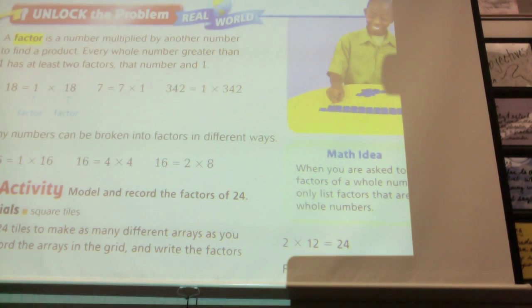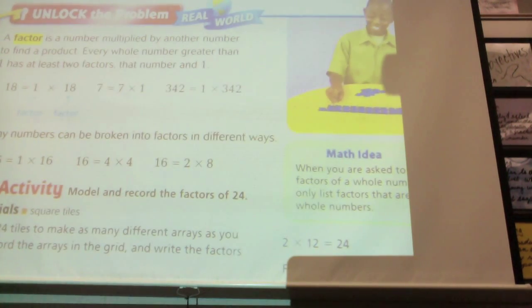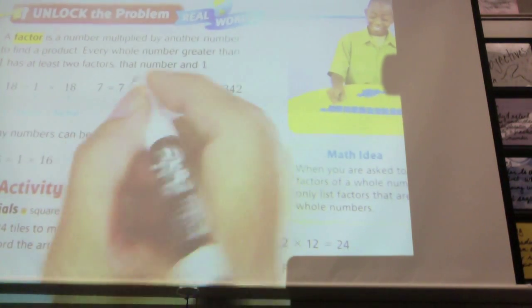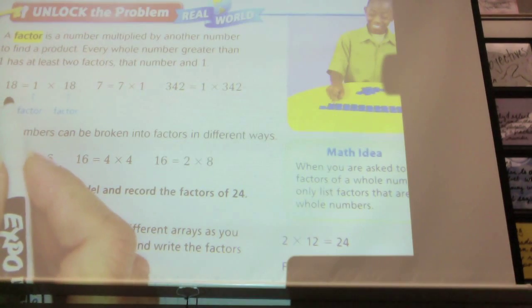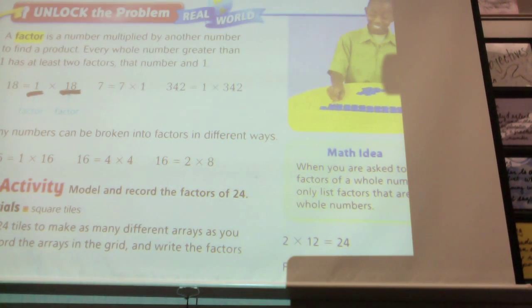Every number has at least two factors. There could be more. Aidan. One times that. One and that number. Right? So every number, no matter what number I give you, it has two factors. It has a 1 and it has that number. So if I said I want you to find all the factors of 18, right away, you have two. You know that 1 times 18 are two of the factors.